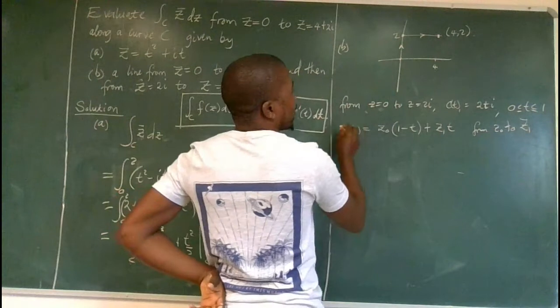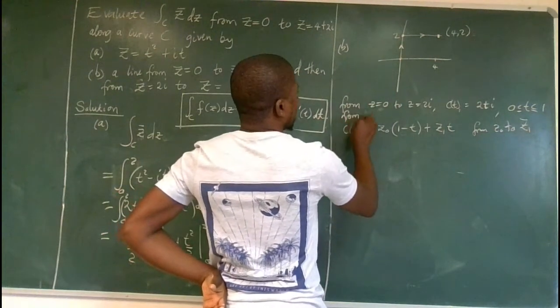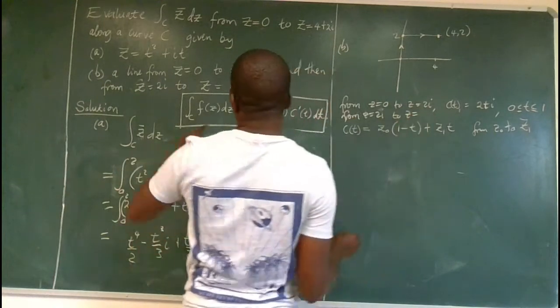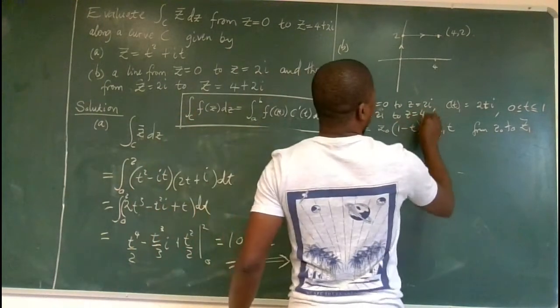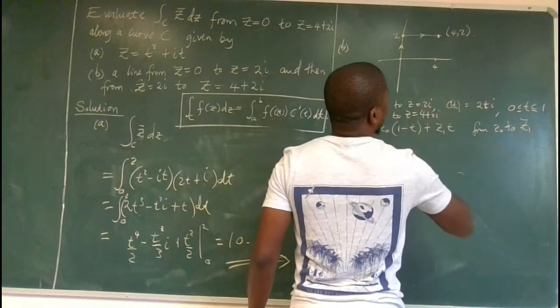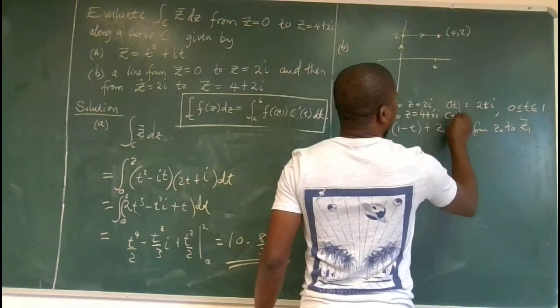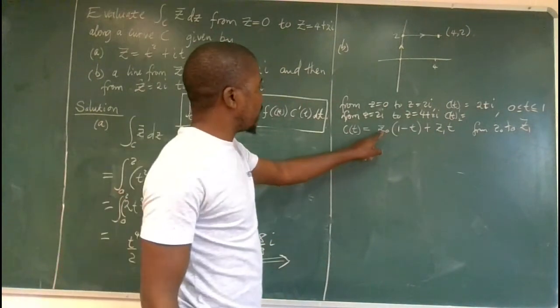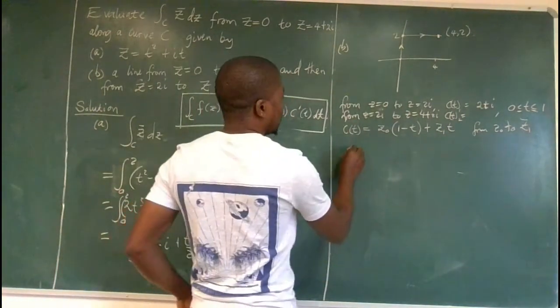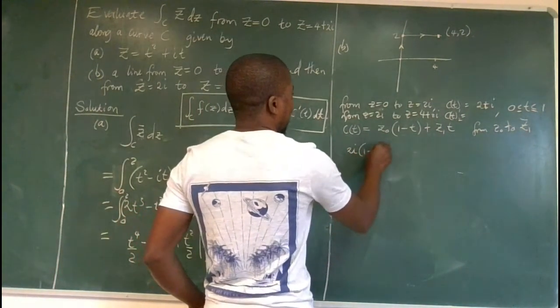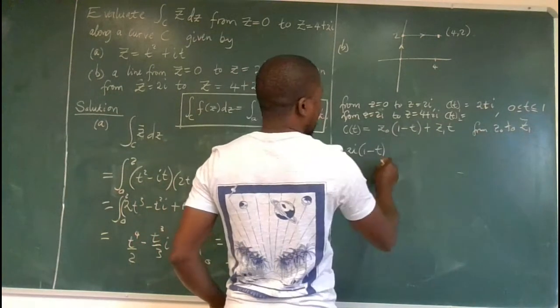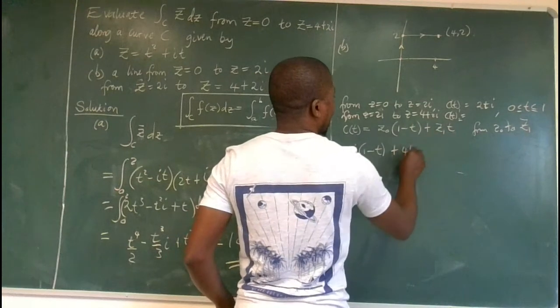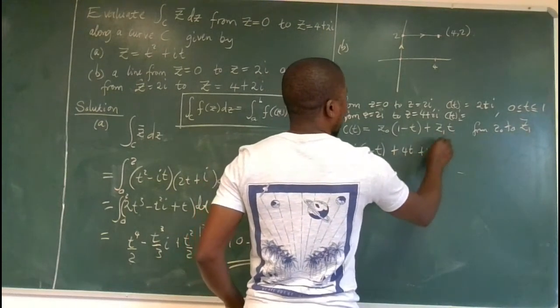So let's do the other piece again from z equals 2i to z equals 4 plus 2i. So our c(t), in this case, let's call that c(t)2 is, let's place 2i here. So it will be 2i in brackets (1 minus t). Plus where we are going, if we multiply by t, it's 4t plus 2i t.